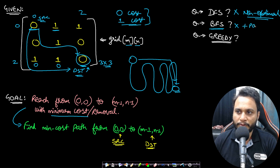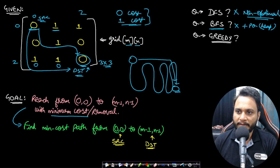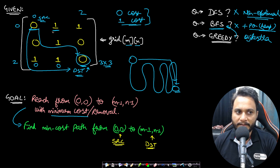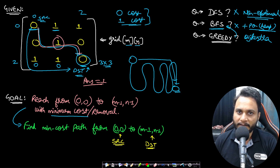Since empty cells cost zero and obstacle cells cost one, we have two different costs. We will use a priority queue — a min-heap — in combination with BFS so that we can greedily always pick the best possible option at the next hop. Applying a greedy technique on BFS using a priority queue heap is exactly Dijkstra's algorithm. In the example, the answer is one, since you can go from 0,0 and follow a path removing just one obstacle.